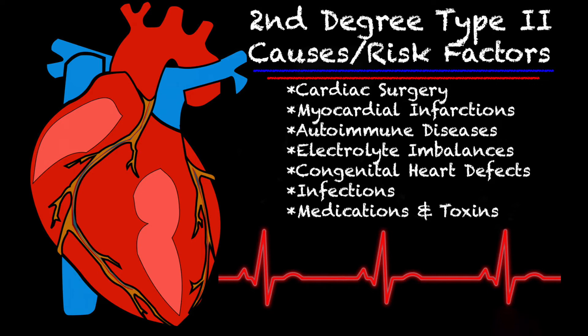Autoimmune diseases like Lyme disease can cause a second degree type 2, as well as electrolyte imbalances — specifically hyperkalemia — congenital heart defects, infections like endocarditis and pericarditis, and medications and toxins can also cause second degree type 2s.